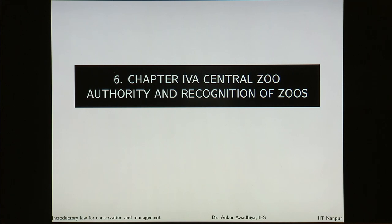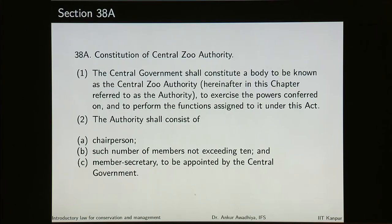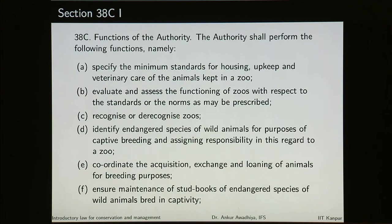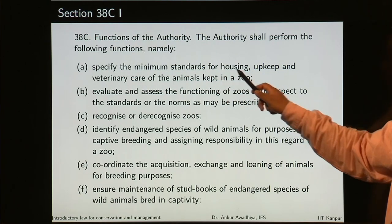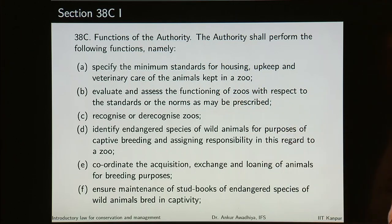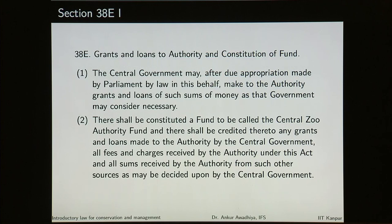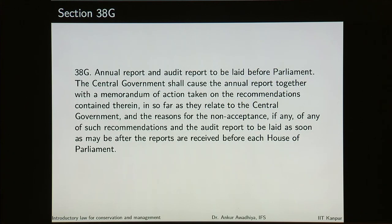Chapter 4A deals with central zoo authority and recognition of zoos. There is a central zoo authority comprising a chairman, members not exceeding 10, and a member secretary, with several functions including setting minimum standards for housing, upkeep and veterinary care of animals, evaluating and assessing the functions of zoos, recognizing and de-recognizing zoos. There are grants and loans to the authority and there is a fund. Because there is a fund, there will be an annual report and an audit report, which will be laid before parliament. It also talks about recognition of zoos, acquisition of animals by a zoo, and prohibition of teasing animals.